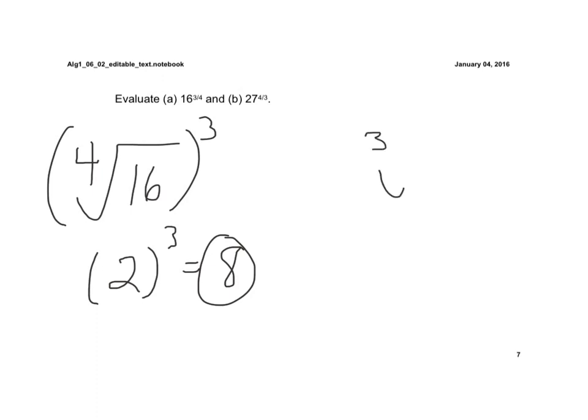Part B, it's the cube root of 27, all to the fourth power. And the cube root of 27 is 3, because 3 times 3 times 3 is 27. And I take that, and I raise it to the fourth power, which is 81.